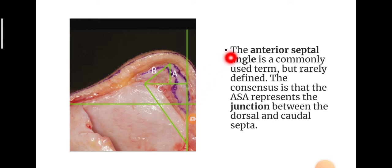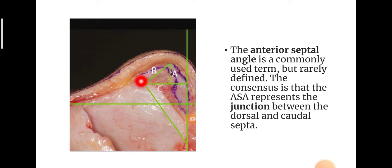The anterior septal angle is a commonly used term but rarely defined. The consensus is that the anterior septal angle represents the junction between the dorsal and the caudal septum. This junction constitutes the anterior septal angle.